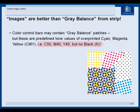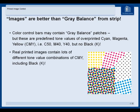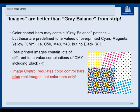For example, 50% cyan, 40% magenta, 40% yellow — but no black. Real printed images contain lots of different tone value combinations of CMY, including black as well. Image control regulates color control bars plus real images, so not color bars only.